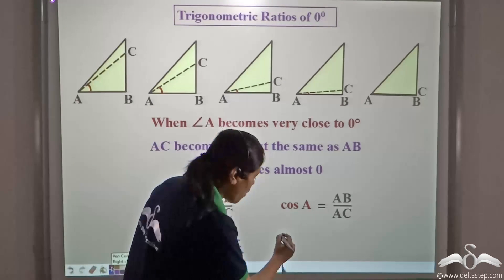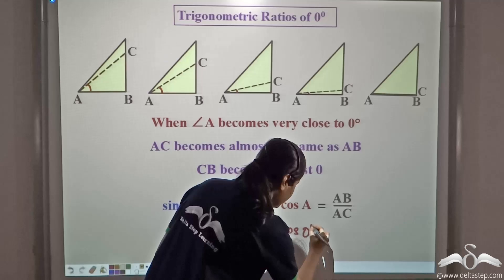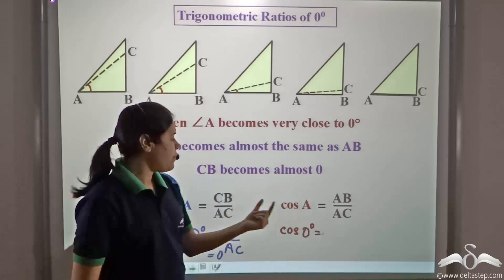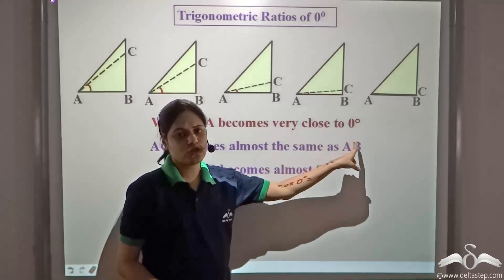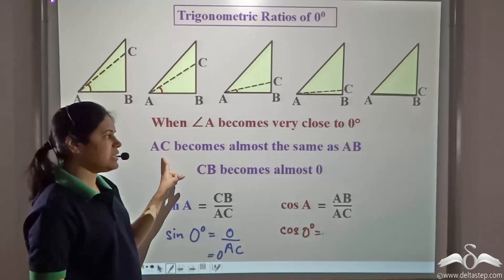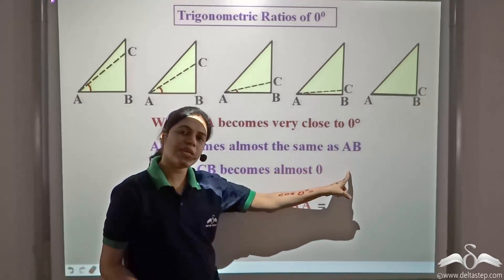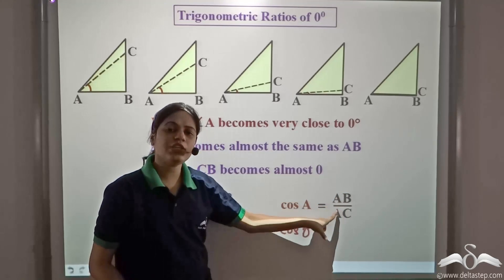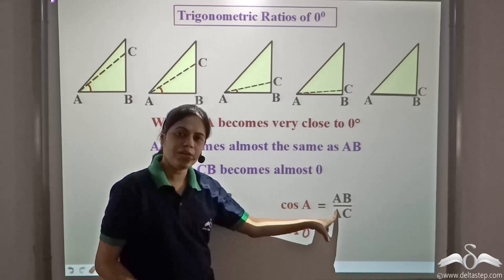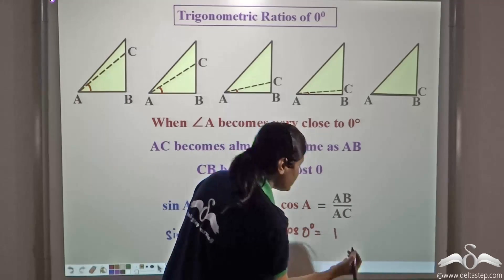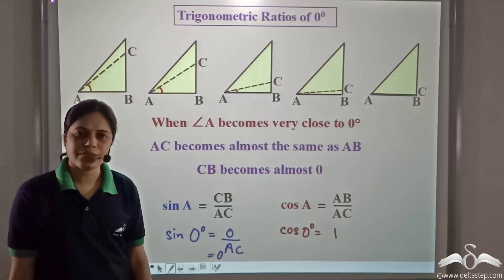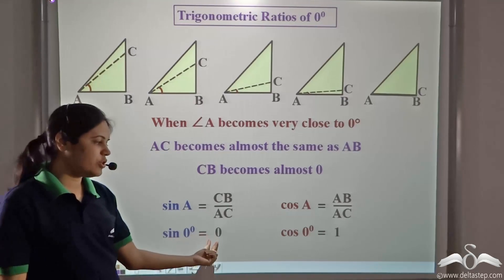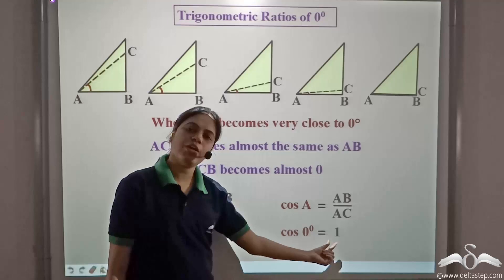Also, cos zero degree is equal to AB by AC. But when angle A becomes very close to zero degree, AC becomes almost the same as AB. So these two are almost equal, and I can write cos zero degree is equal to one. So we have sin zero degree equal to zero and cos zero degree equal to one.